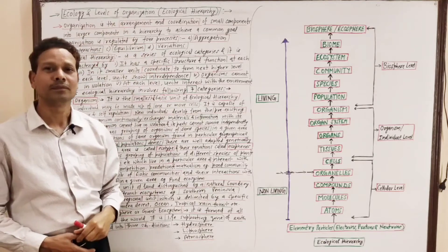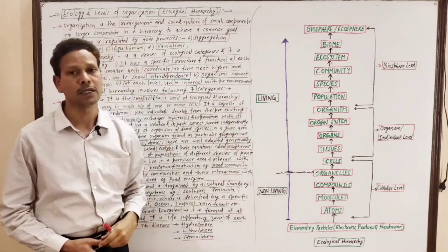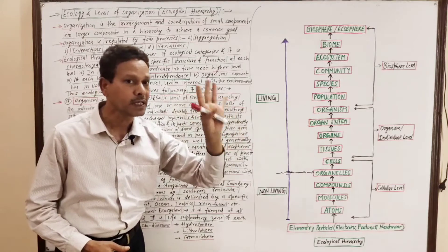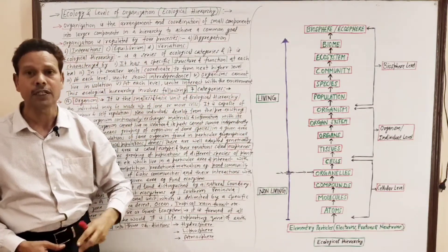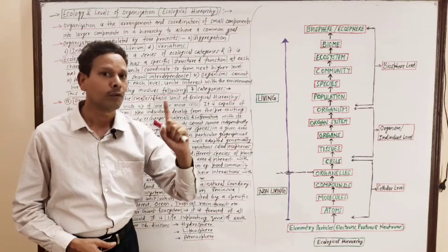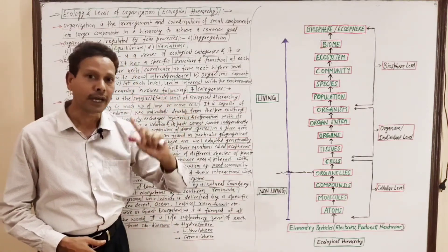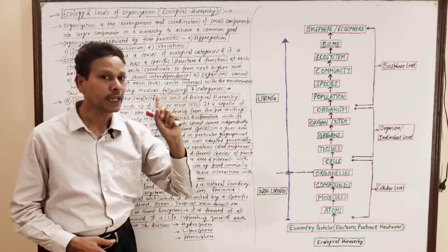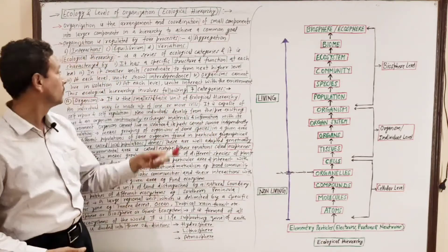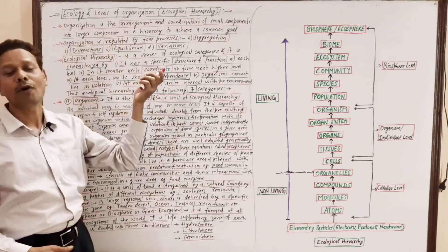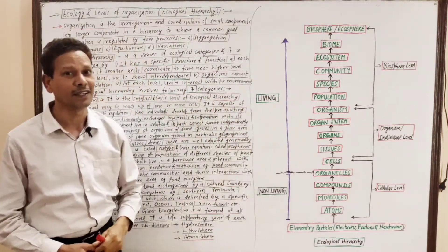This organization is regulated by 4 factors — 4 processes. The first is aggregation, the second is interactions, the third is equilibrium, and the fourth is variations. This is very important in today's lecture on Ecological Hierarchy.